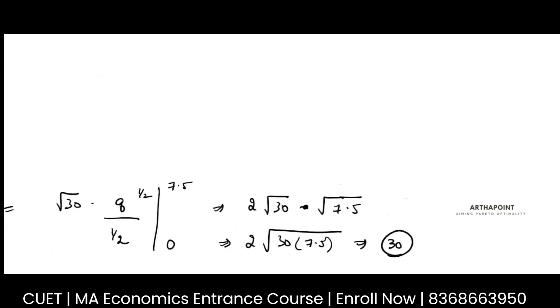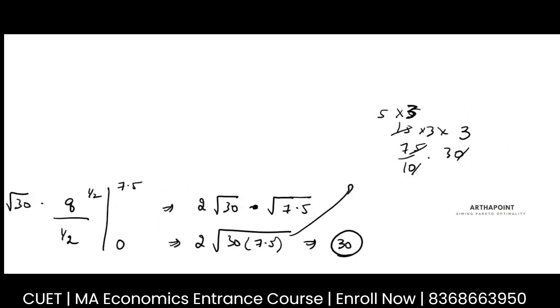So this will be 2 root 30 into 7.5 and this will be 30. Right? So 7.5 will be nothing but 75 by 10 into 30. This will be 15 into 3 into 3.